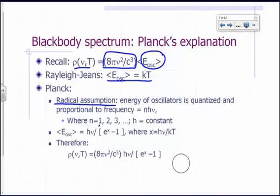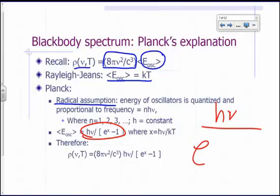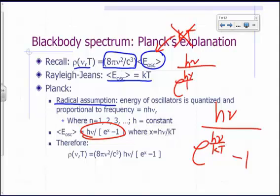Planck was able to show that the average energy of the oscillator would be equal to hν over e^x minus 1, where x is defined to be hν over kT, where k is Boltzmann's constant. So instead of just kT here, this is no longer kT.